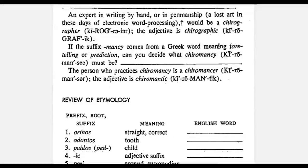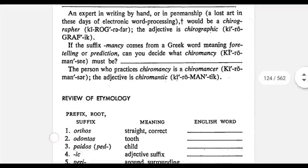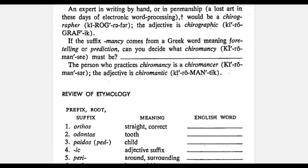The next word is chiromancy. Cheiro means hand and mancy means to predict. So chiromancy is palm reading — what an astrologer does when you show your hand to know what will happen in the future.